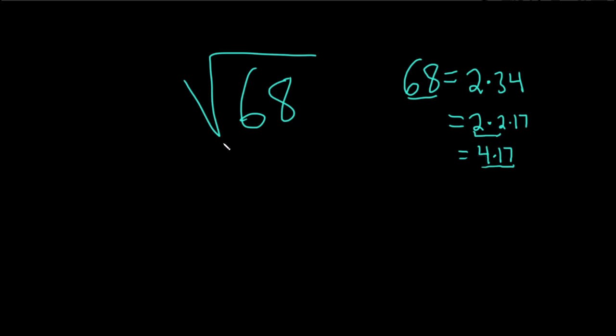And so now we're in a good place because now we can go back here and then just replace the 68 with what you did here with this 4 times 17. So this is 4 times 17. And then you can break it up. Use properties of square roots.